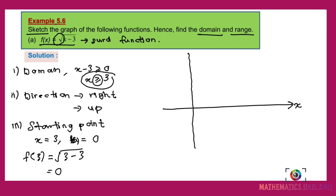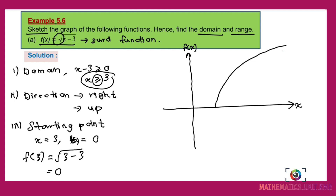Label the graph f(x) equals √(x minus 3) with the starting point at x equals 3. The domain is from 3 to infinity and the range is from 0 to infinity.